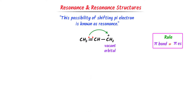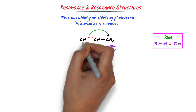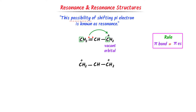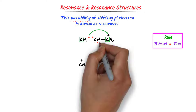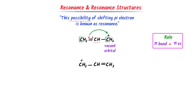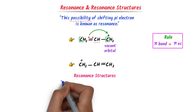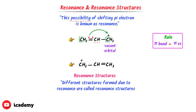This possibility of shifting electrons from one atom to another atom is known as resonance. Remember that I use the word possibility — shifting of electrons is a possibility. When these pi electrons shift from the first carbon to the third carbon, we get another structure. Here, the first carbon has lost an electron, so a positive charge will appear on it, while the third carbon has gained an electron, so a negative charge will appear on it. The second carbon has neither gained nor lost any electron, so it remains as it is. These two structures are known as resonance structures or resonating structures — different structures formed due to resonance.